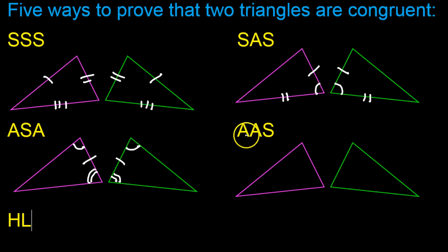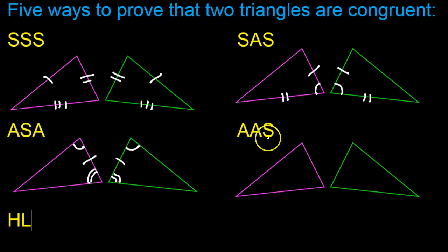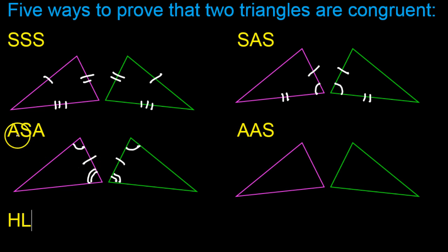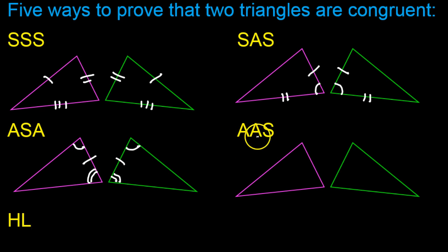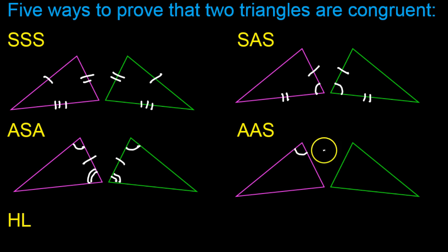That brings us to angle, angle, side. Now this is similar to the last one. Notice that in both cases we have two angles and a side. So what's the difference? Well, for angle, side, angle, you have to have the two angles and the side between them. For angle, angle, side, you need two angles and the side that is not between them. So for example, let me use a different angle this time.